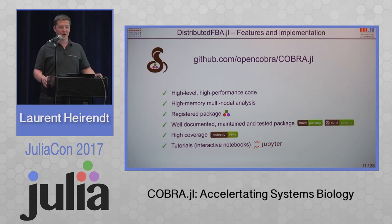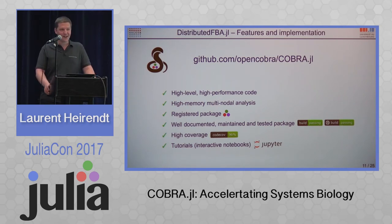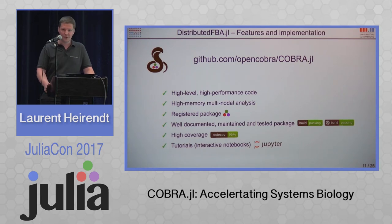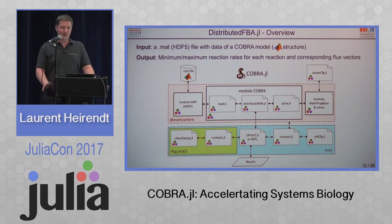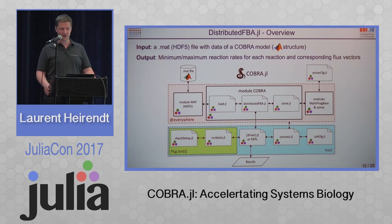COBRA.jl is a registered package — yesterday there was a speaker talking about how the name is everything. We're happy that COBRA.jl is registered under the umbrella of officially released packages. It's also a well-documented and tested package, as well as multi-platform, so most biologists in our community using Windows can use COBRA.jl. To get you started, there are Jupyter notebooks to run your first flux balance or flux variability analysis. COBRA.jl started about eight months ago, so it's still a small package.